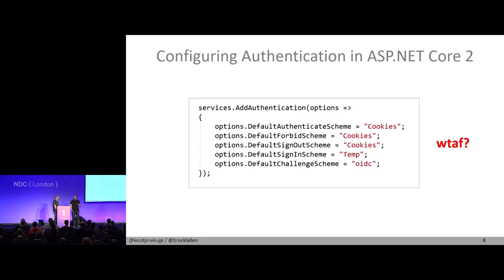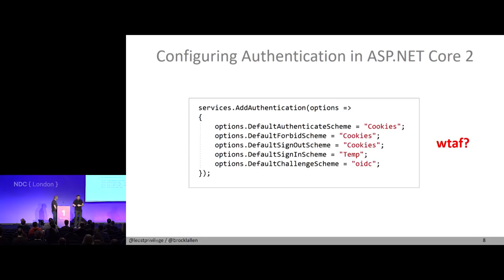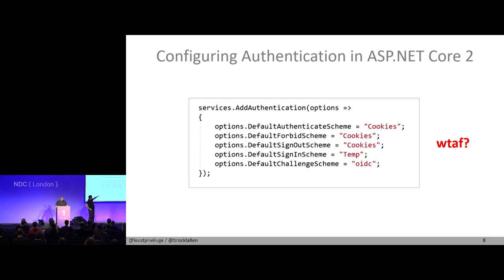You have exactly one middleware in the pipeline which is the authentication middleware, and this will go at runtime to the DI container to get your default handler. It turns out it's not a trivial problem to solve. You now have a default authenticate scheme, a default forbid scheme, a default challenge scheme, a default sign-in scheme, and a sign-out scheme. This is actually not an uncommon configuration: you have your cookie handler as the primary authentication handler, but when you want to send the user to a login page, the login page is on your OpenID Connect provider so you set the challenge scheme to OIDC.